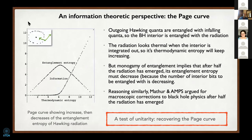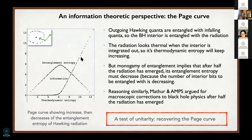Remember we talked about Hawking radiation involving pair production just outside the horizon, where one quantum goes in and one quantum goes out. Don Page observed that you should think about the outgoing Hawking quanta being entangled with the interior of the black hole. The radiation looks thermal when the interior of the black hole is integrated out—that's why its thermodynamic entropy keeps increasing. But the monogamy property implies that one qubit can't be maximally entangled with two different qubits at the same time.